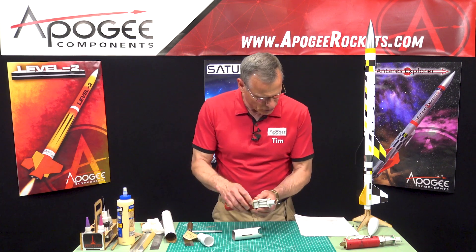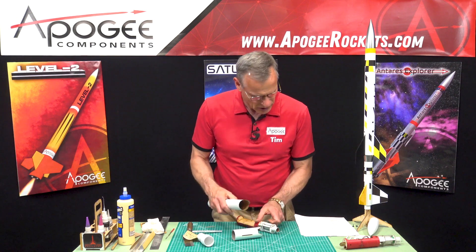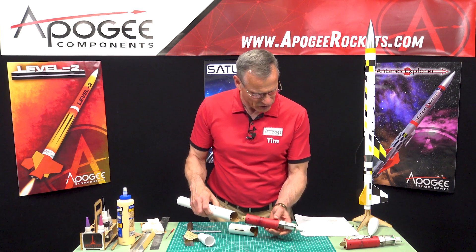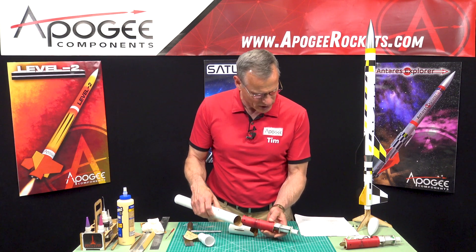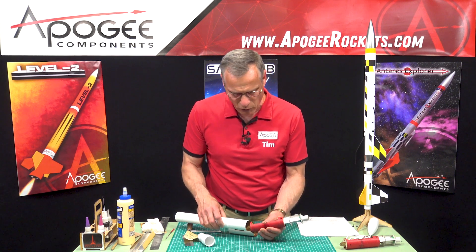Next, the upper part of the tube is used to correctly align the motor mount and ebay in the FinCan tube. Slide the upper tube onto the ebay and secure it in place with one of the removable rivets.